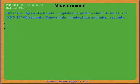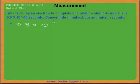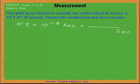So we will start. 1 minute is equal to 60 seconds. So we are going to convert 0.53 into 10 to the power minus 18 seconds. 1 minute equals 60 seconds, so the seconds will cancel.